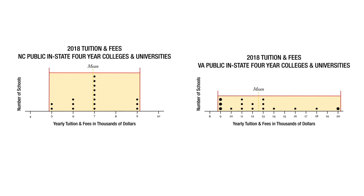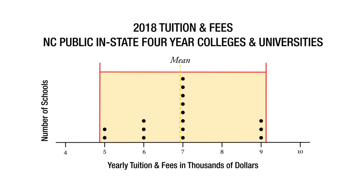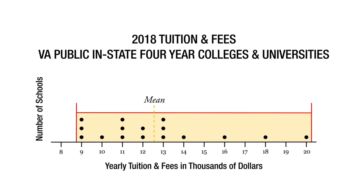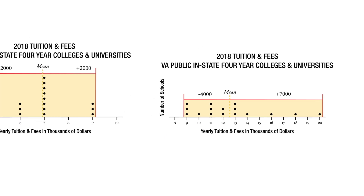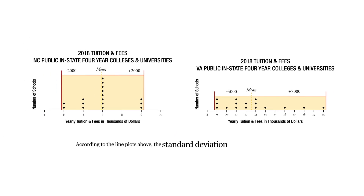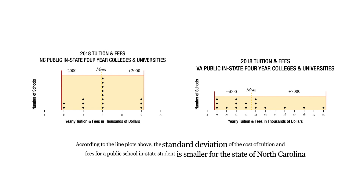In Virginia, they're spread out a bit more — we have some way up here at $20,000 and some down here at $9,000. So it's not enough just to look at the graph visually; you have to look at the actual axes. You can see that all the North Carolina schools fall plus or minus $2,000 of the mean, whereas Virginia has a big spread. So our answer is that the standard deviation for the cost of tuition is smaller in the state of North Carolina.